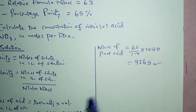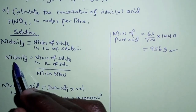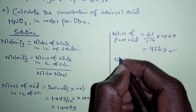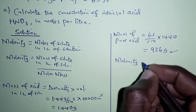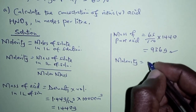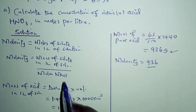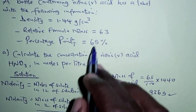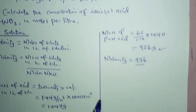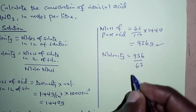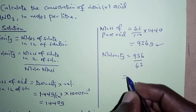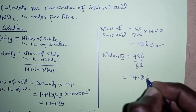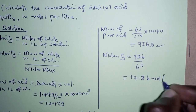With this mass, we can now apply the molarity formula. Molarity equals mass of the solute, which is 936, over the molar mass or relative formula mass, which is 63. So we divide 936 by 63.